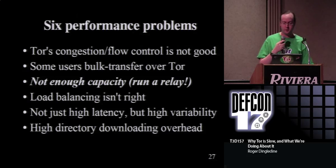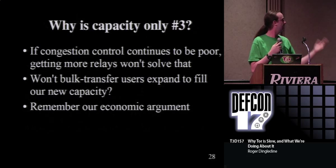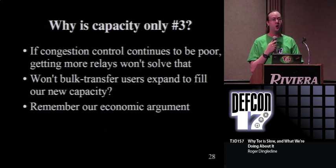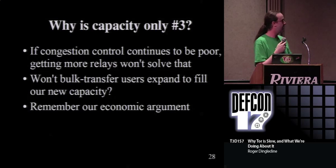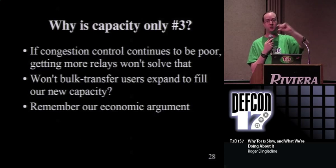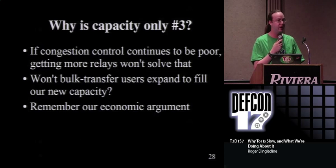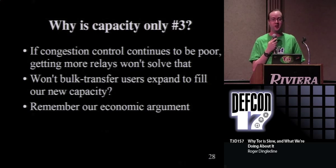The third issue: not enough capacity - we need more relays. Why is this number three? Because one of our funders said 'Tor is slow, we're going to stop paying for development and just run a lot of relays, and then Tor is going to be fast, right?' Turns out it doesn't work that way. Because if this congestion control problem doesn't get solved, we get a lot more capacity but we're still going to have that one TCP stream slowing everybody down. And if the bulk transfer users aren't somehow made more fair, they're just going to fill up whatever capacity we add. We could double the capacity of the Tor network and some BitTorrent user is going to get really happy, and the people in Iran are going to stay pretty sad.